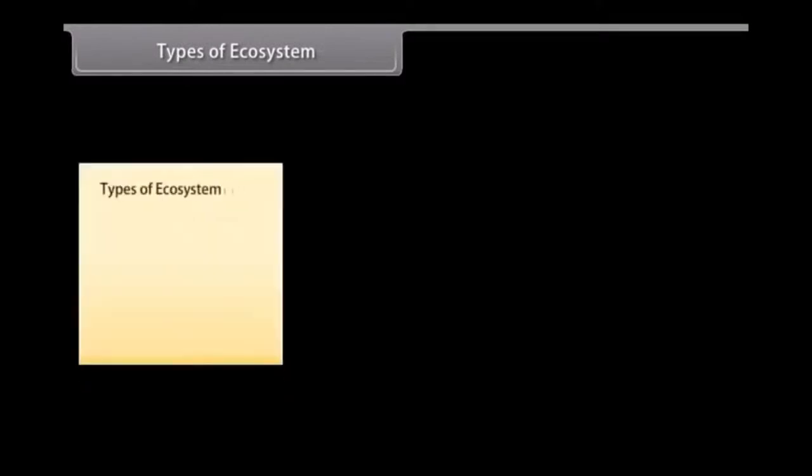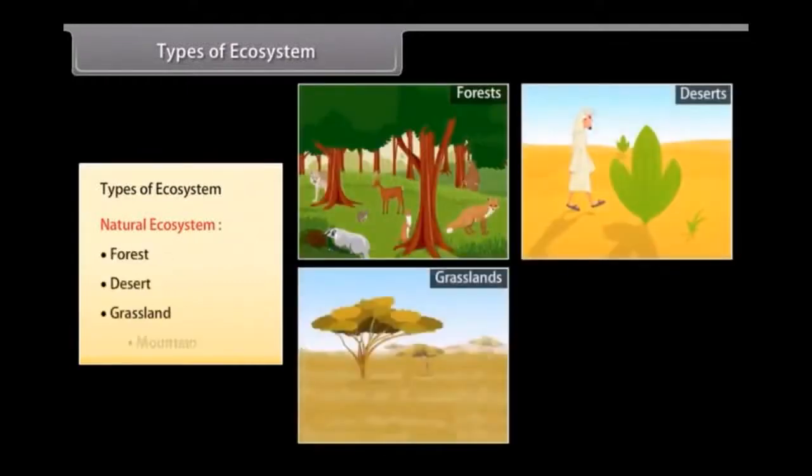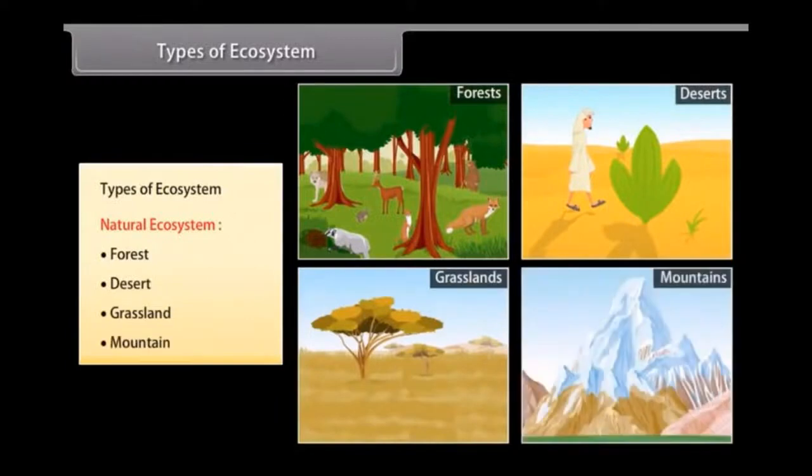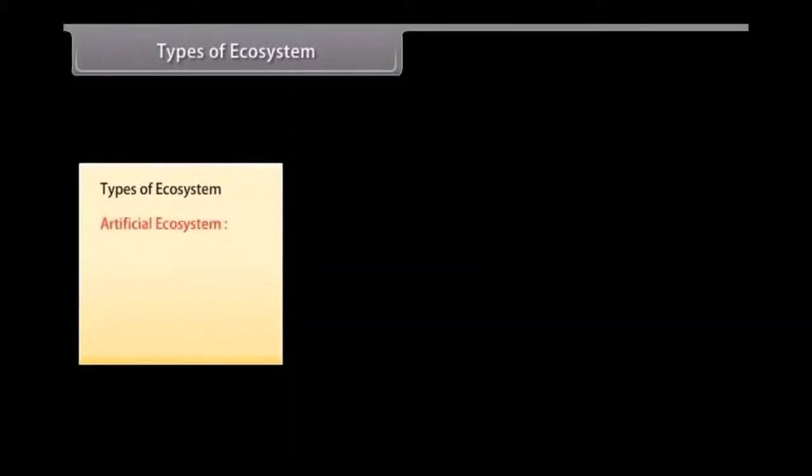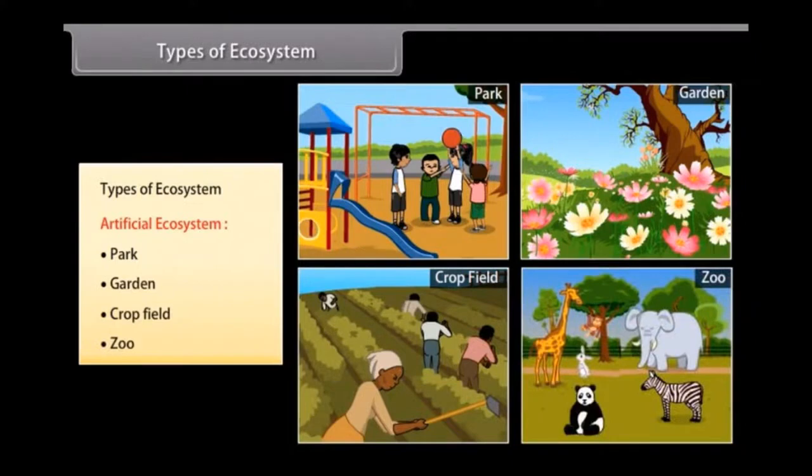Types of ecosystem. There are two different types of ecosystems. One, natural ecosystem in which we have forests, deserts, grasslands, mountains, etc. And two, artificial ecosystem in which, for example, parks, gardens, crop fields, zoo, etc. exist.